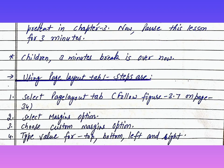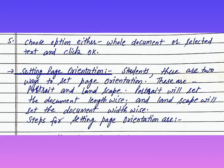Using the Page Layout tab, steps are: Number 1 — select the Page Layout tab, follow figure 3.7 on page 34. Number 2 — select the Margins option. Number 3 — choose Custom Margins option. Number 4 — type values for top, bottom, left, and right. Number 5 — choose the option either whole document or selected text, and click OK.